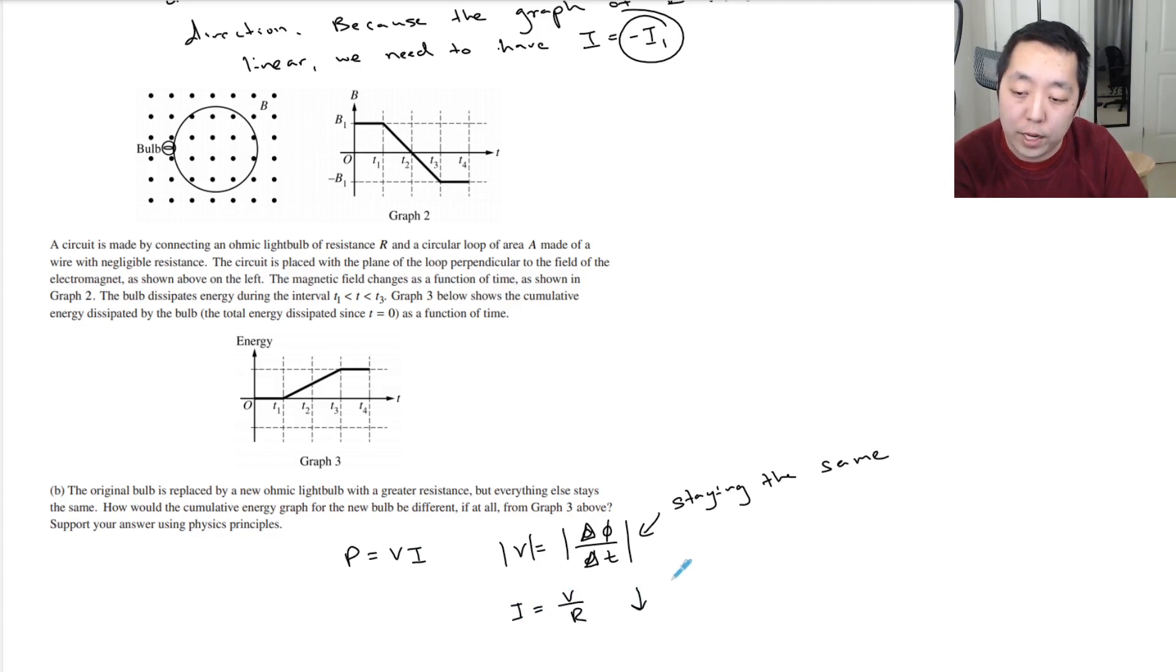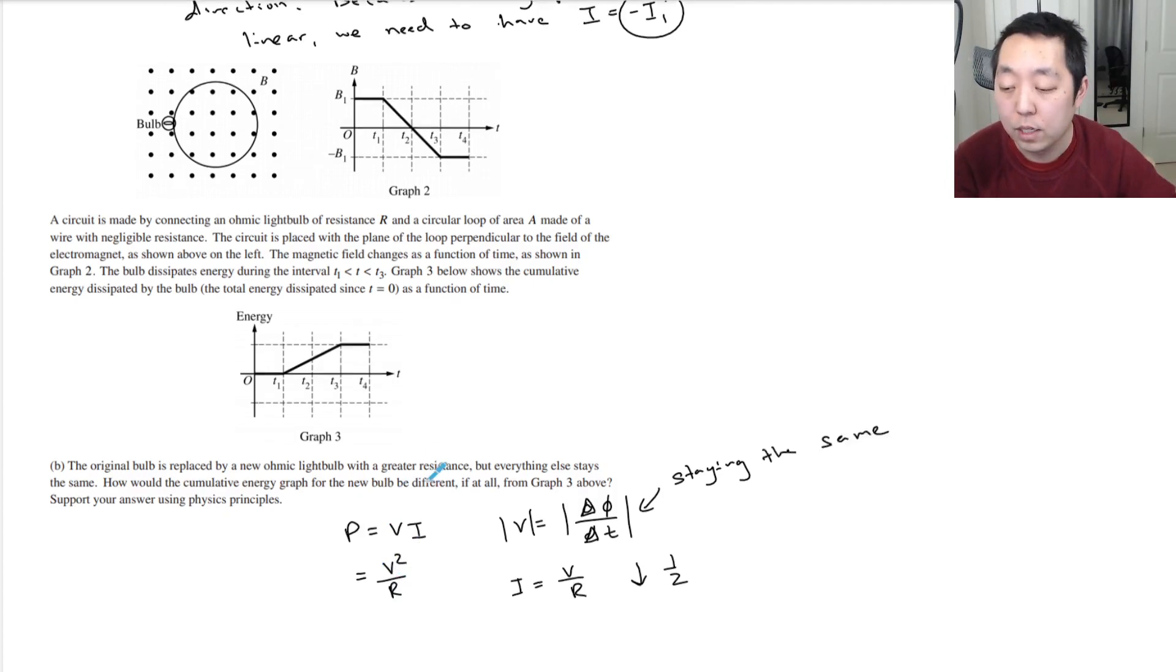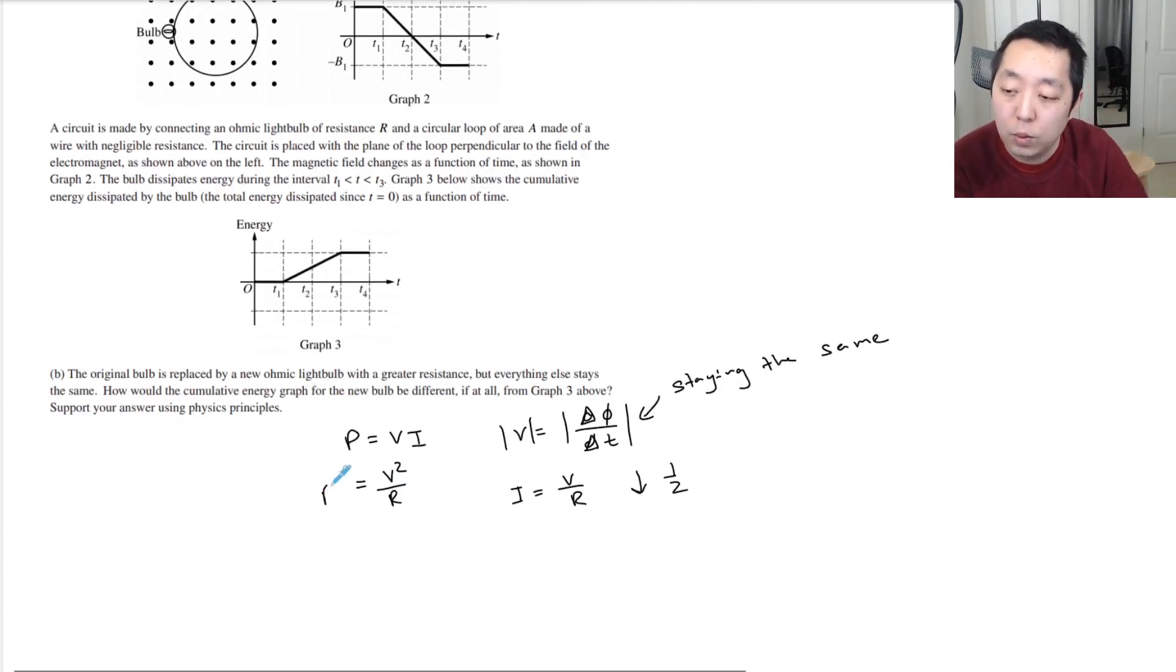However, the current which equals V over R is down by one half. You can use the resistance equation V squared over R because we know V is constant. If R doubles, R goes up 2x, then the power drops by 2x, which means the energy in the same time drops by 2x.